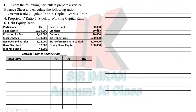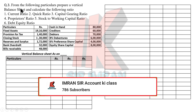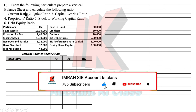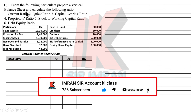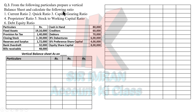Today we are going to solve question number three. It says: from the following particulars, prepare a vertical balance sheet. First we have to prepare the vertical balance sheet, then calculate the following six ratios — balance sheet ratios including current ratio, quick ratio, and others. Entries given include fixed assets, provision for tax, and all will appear in the vertical balance sheet.